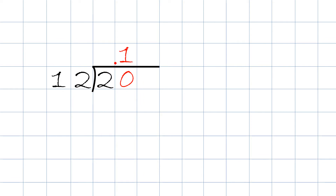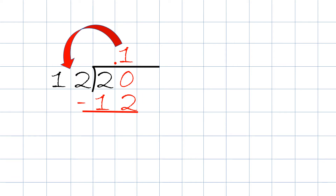We then take 1 times 12, which will be 12. We write the 12 right up here. Then 20 minus 12 will be 8. Since 8 is smaller than 12, we add another 0 and we bring it down. So now we have 80.